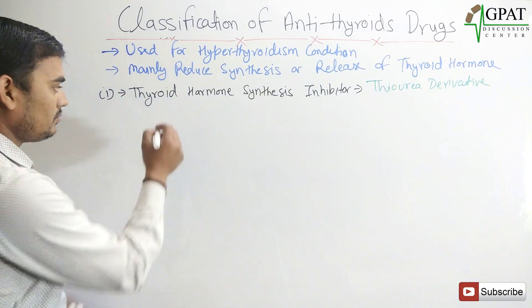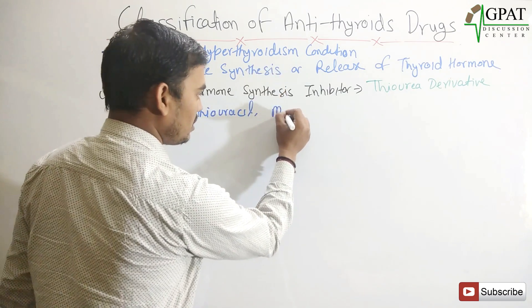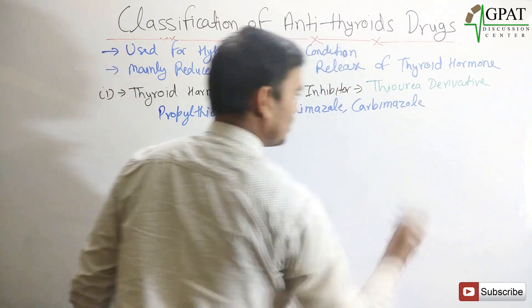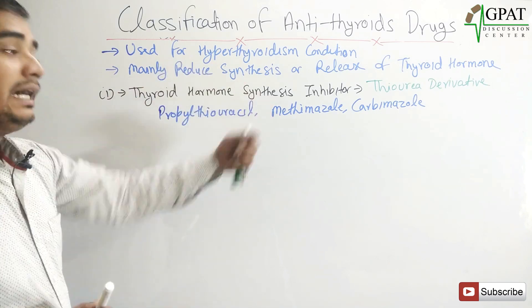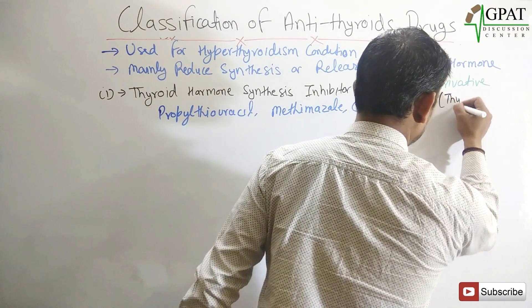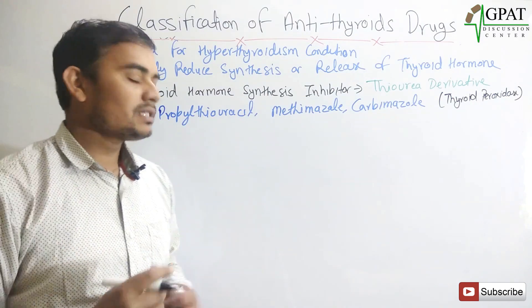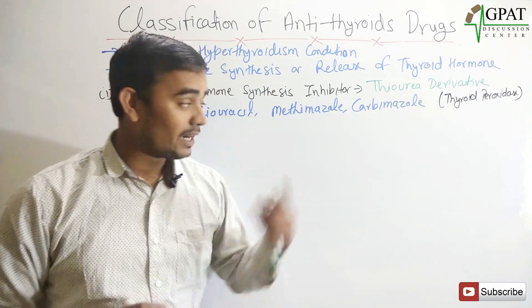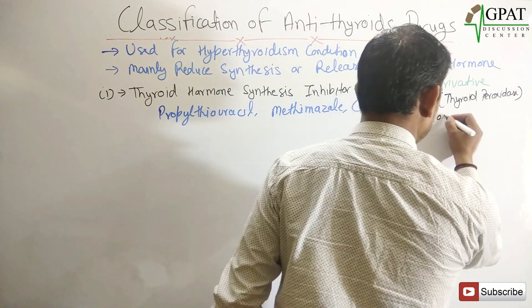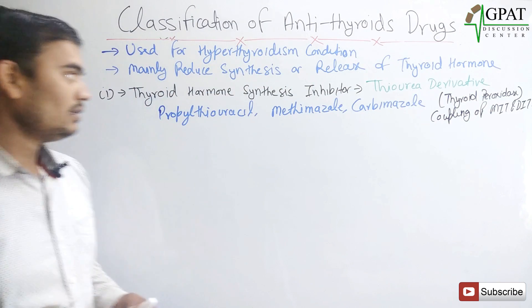All thyroid hormone synthesis inhibitors are thiourea derivatives. Examples are propylthiouracil, methimazole, and carbamazole. These thiourea derivatives inhibit the enzyme thyroid peroxidase, which is mainly responsible for the synthesis of thyroid hormone. They also inhibit the coupling of MIT and DIT.